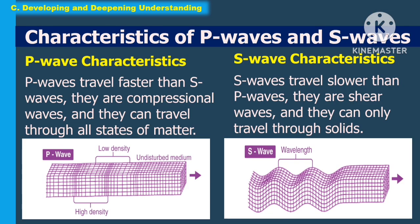The characteristics of P waves and S waves: P waves travel faster than S waves, they are compressional waves, and they can travel through all states of matter. S waves travel slower than P waves, they are shear waves, and they can only travel through solids.